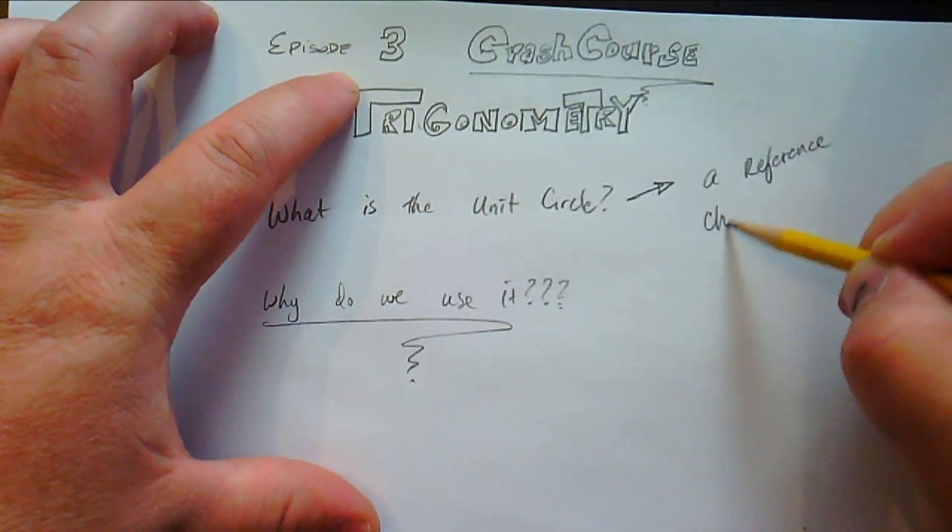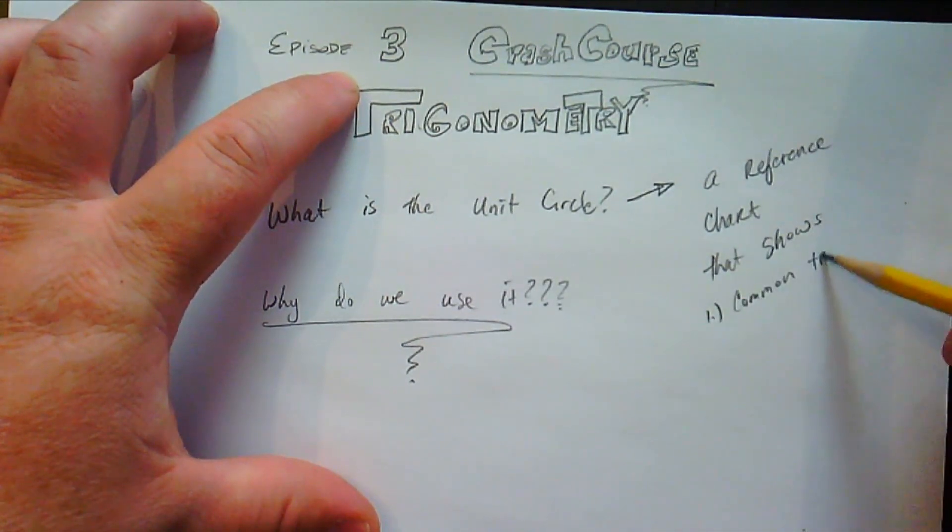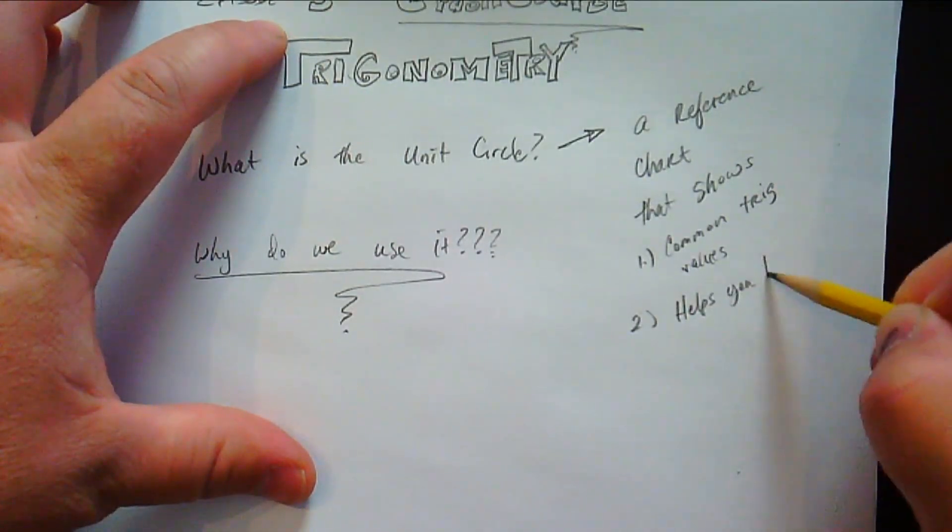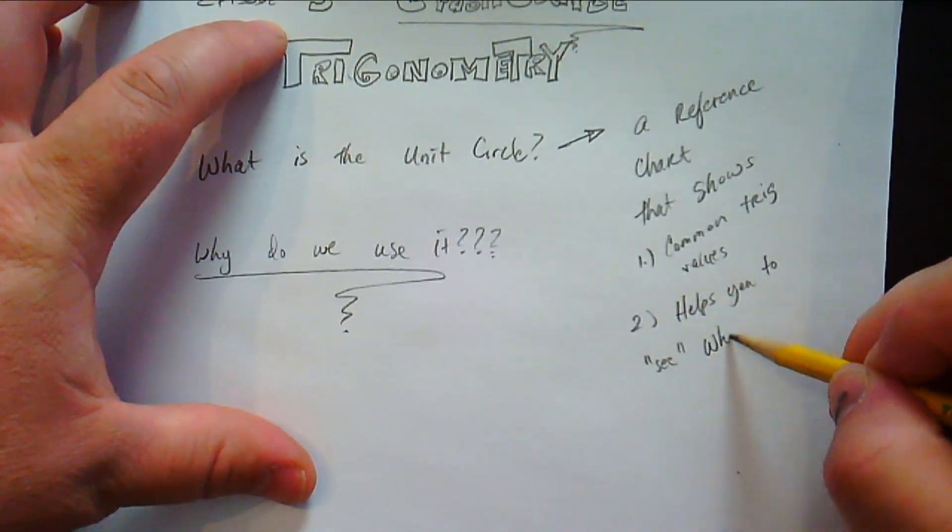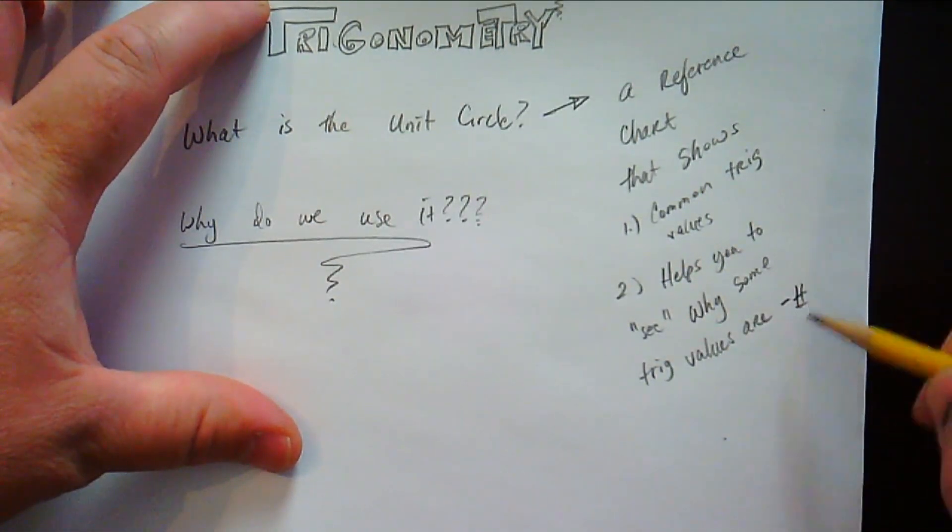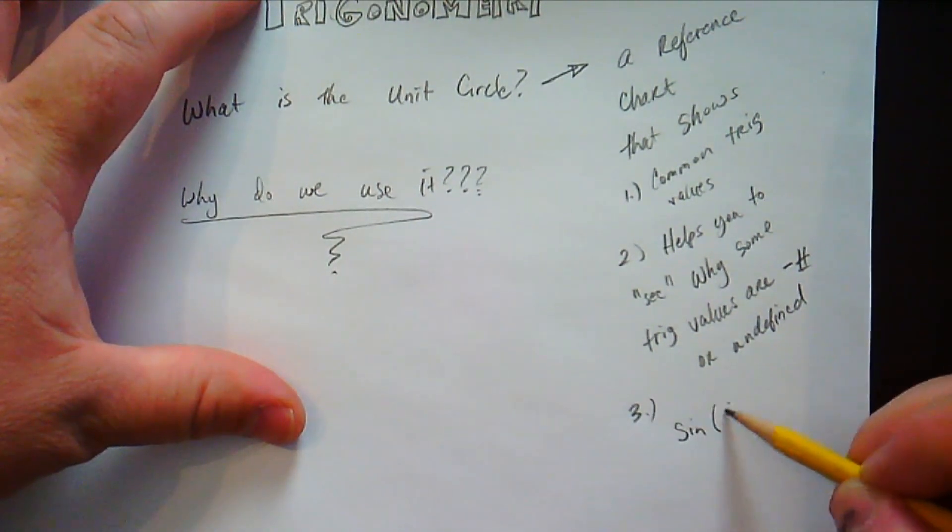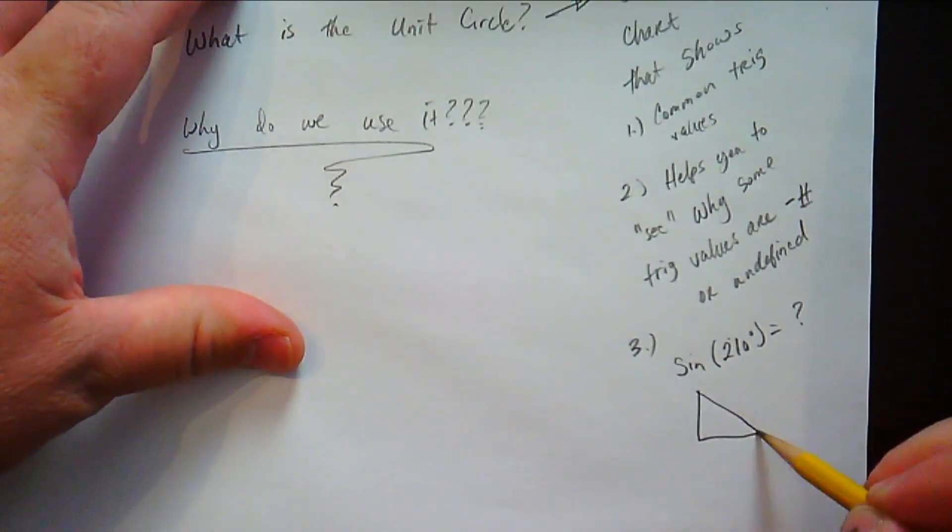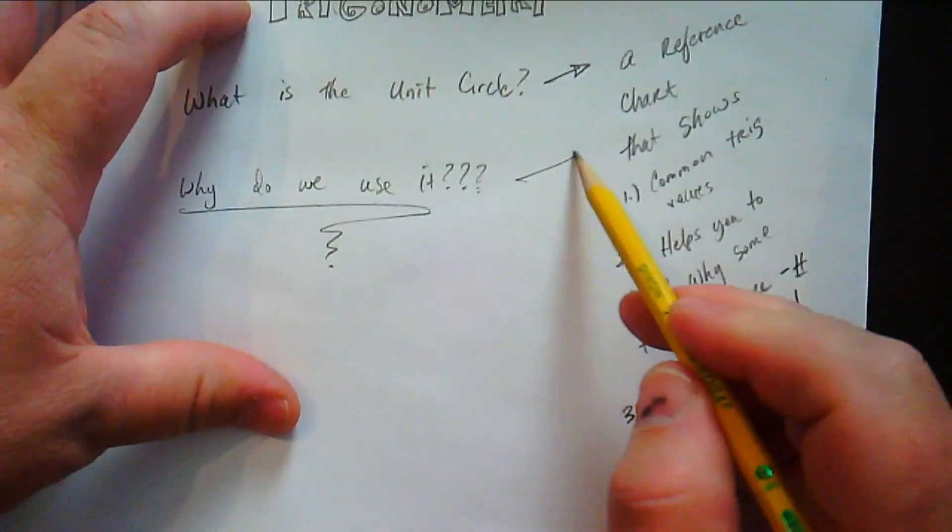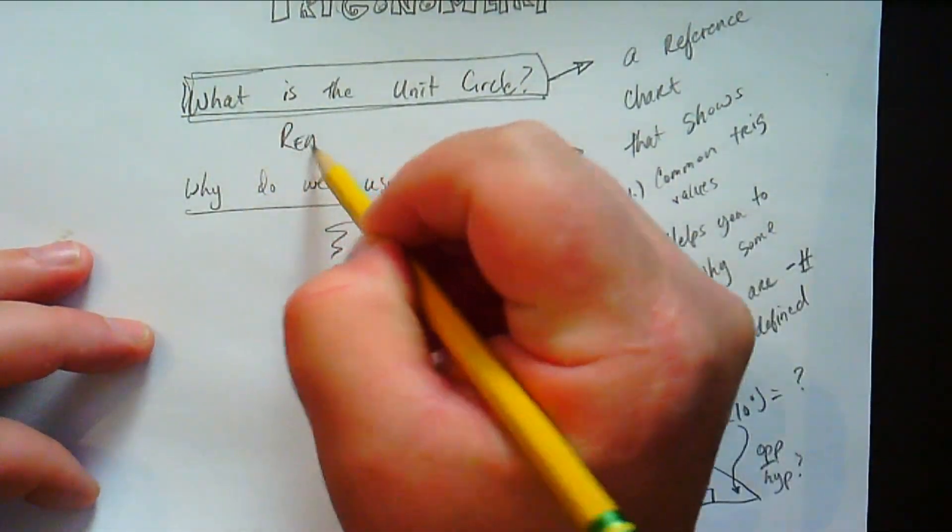Well, the unit circle, really, what it is, is a reference chart. It's not a graph. It's actually a chart. And it shows you common trig values. So there are going to be angles, sine, cosine, coordinates. You can figure out tangent. You can see all kinds of stuff. And what it's going to end up doing, it's going to end up helping you to understand some basic things, kind of like you know with a multiplication chart. You're going to see why some trig values are negative and why you can have a trig value of something like 210 degrees because that doesn't fit in a right triangle, right? Opposite over hypotenuse is the sine of 210. So let's get into it.